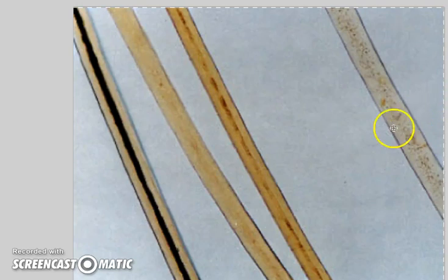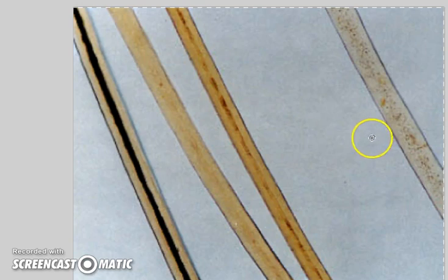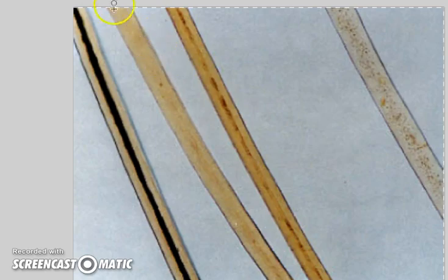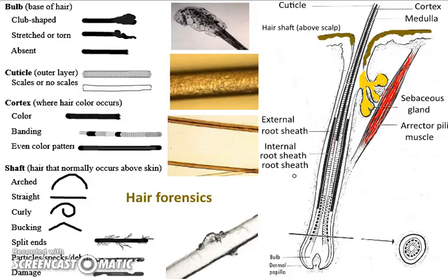A person who commits a crime may think they're clever wearing gloves and cleaning up after themselves, but they leave behind cells, hairs, and other microscopic debris that a forensic biologist can use for evidence.